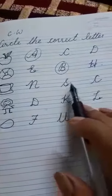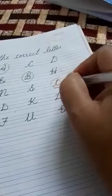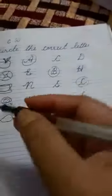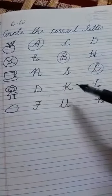N for cup, S for cup, or C for cup. Which letter will you circle? Letter C. Number 4, doll. D for doll, K for doll, L for doll. Which letter will you circle? Letter D.